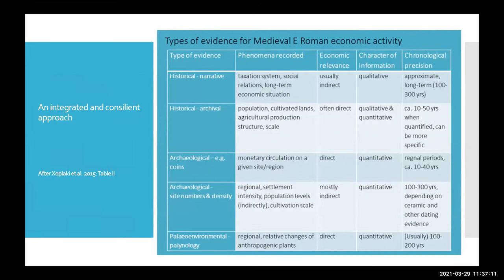I just wanted to remind you briefly of some of the points that Adam made in his opening lecture. This is a useful table he developed that we've used, showing the different sorts of evidence accompanied by the sorts of things they can tell us about and their value for looking at the economic history of the empire, as well as the nature of the information they impart — the degree to which they can offer some chronological precision or not. I show it now simply to underline both the range of types of evidence we can draw upon, but also some of the difficulties attending an integrative approach, since making these different sorts of evidence work together is not straightforward.